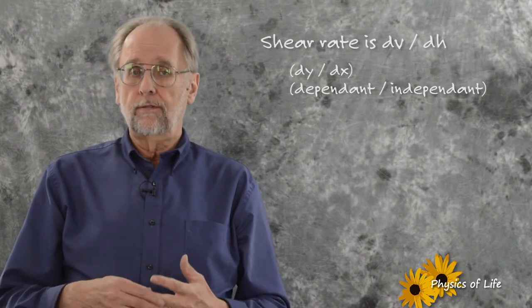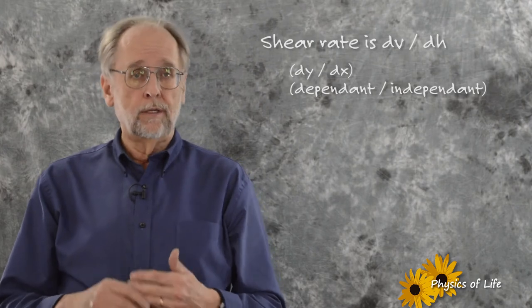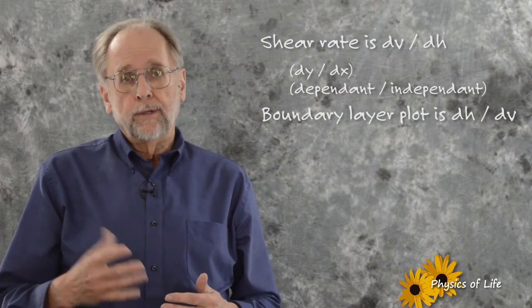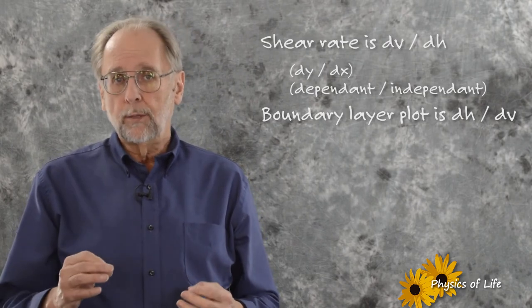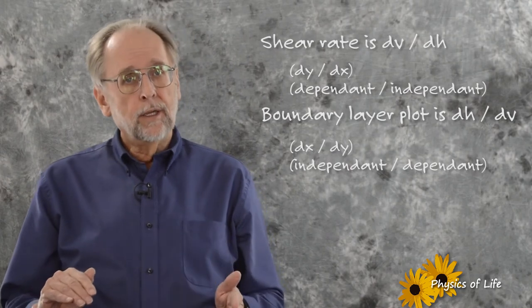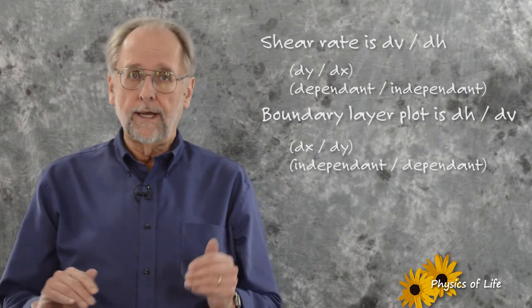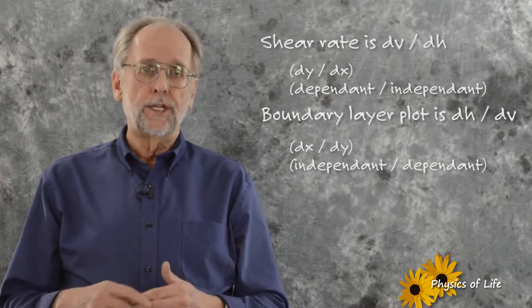That is, the differential of the dependent variable y over the independent variable x. Our boundary layer plot essentially reverses this, plotting the dependent variable velocity on the horizontal axis and the independent variable height on the vertical axis. The reason we're doing it this way is more tradition than anything.